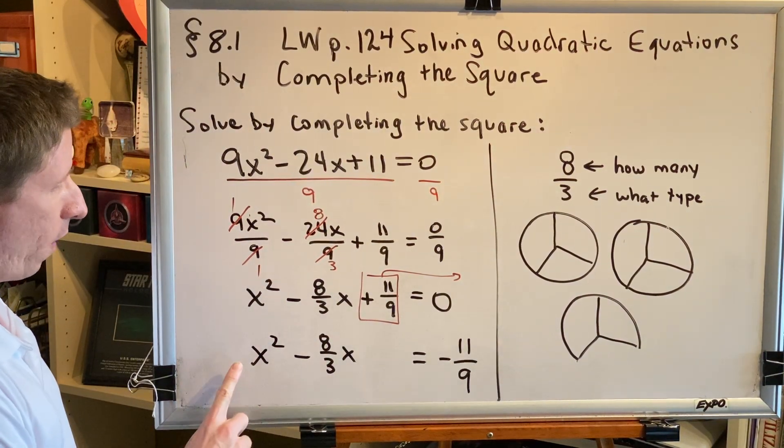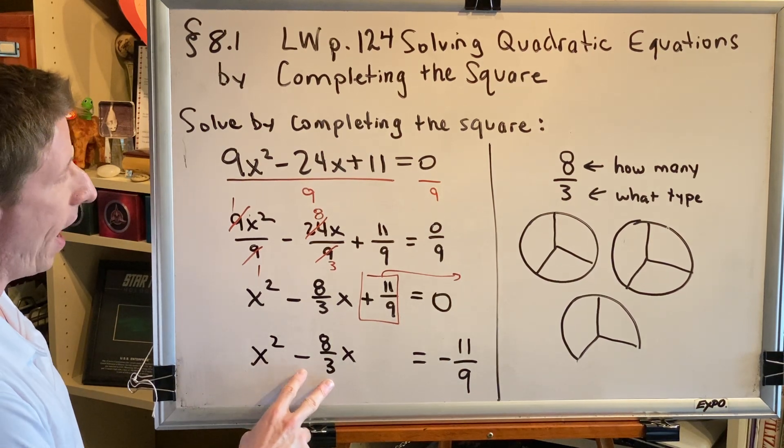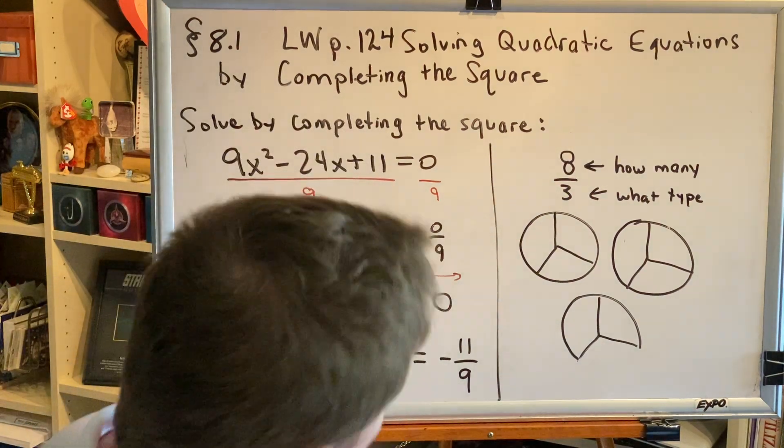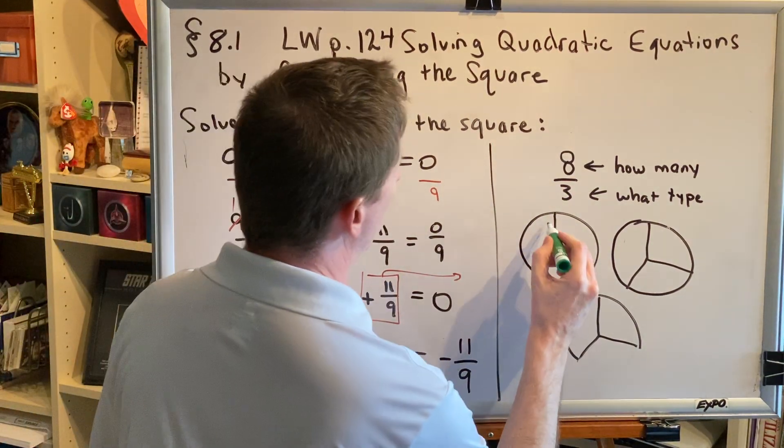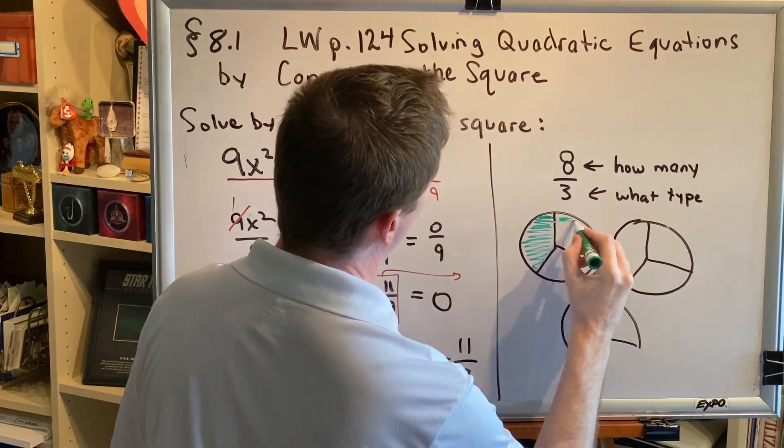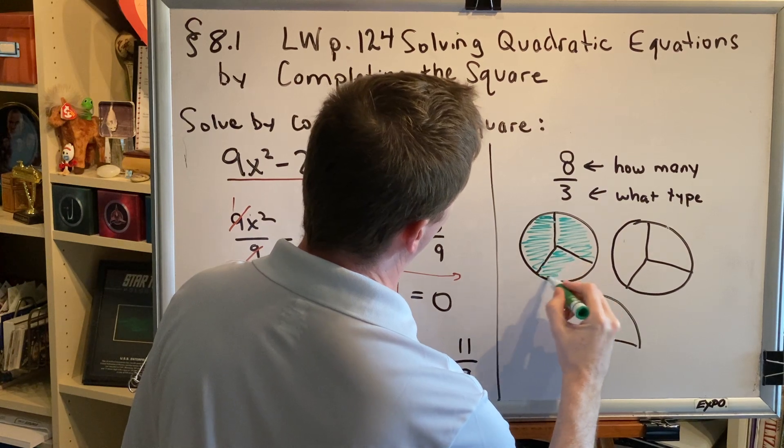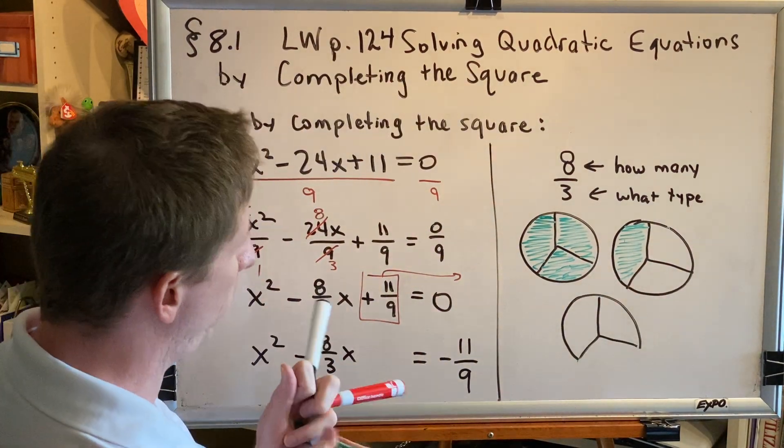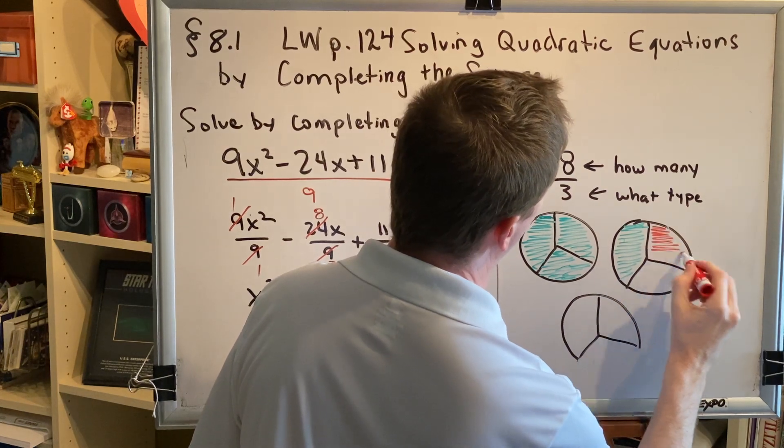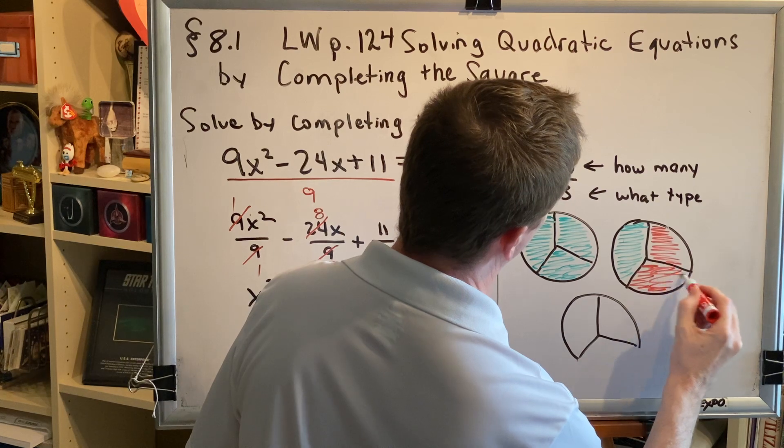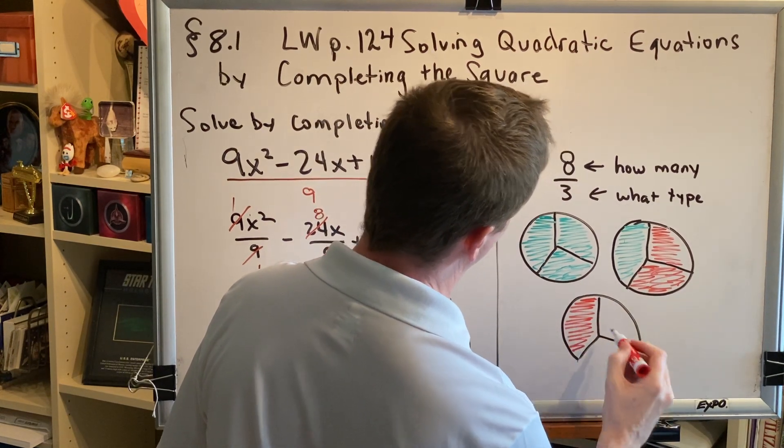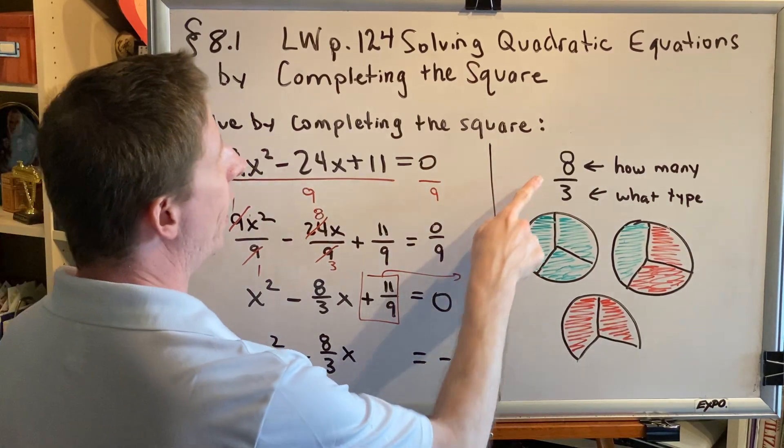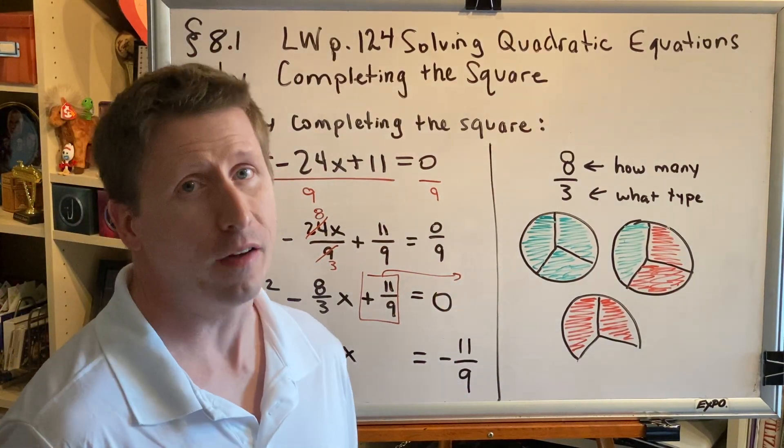When we complete the square on this, we verify that this coefficient is 1, which it is. And then we cut this in half. So we need to take 8 thirds, and we need to cut it in half. So, what is half of 8 thirds? Well, the answer would be 4 thirds. 1, 2, 3, 4 would be half of the 8 that we started with, because here's the other 1, 2, 3, 4. If you understand how fractions work, then you can cut 8 thirds in half very easily in your head. 8 thirds cut in half would be 4 thirds.